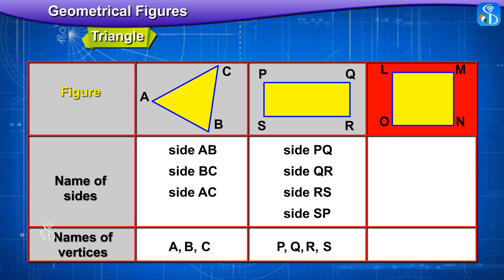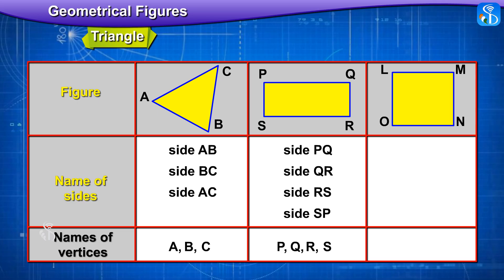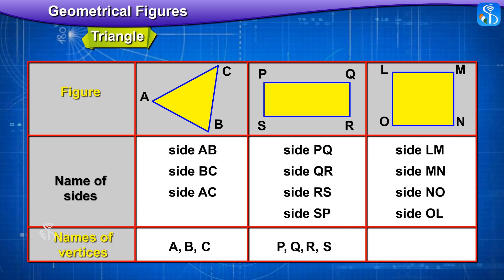What is this figure called? Square LMNO. Name the sides: side LM, side MN, side NO, side OL. Name the vertices: L, M, N, O.